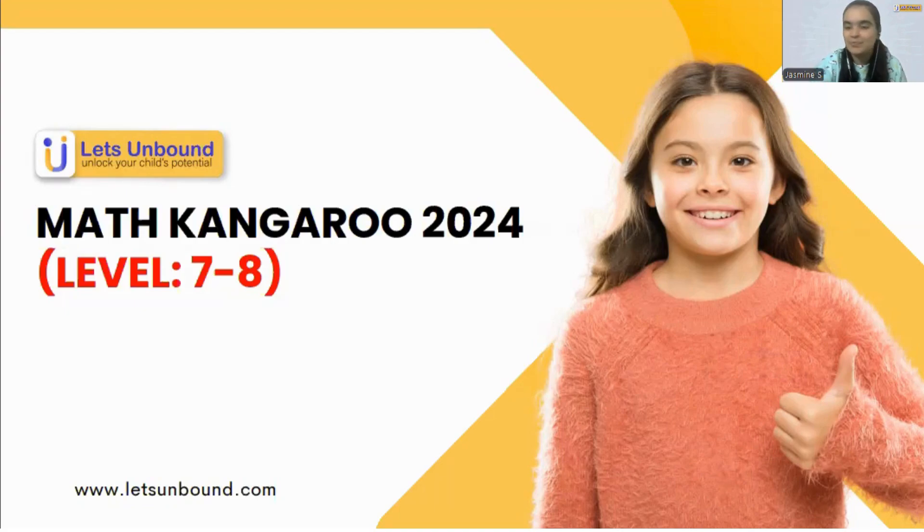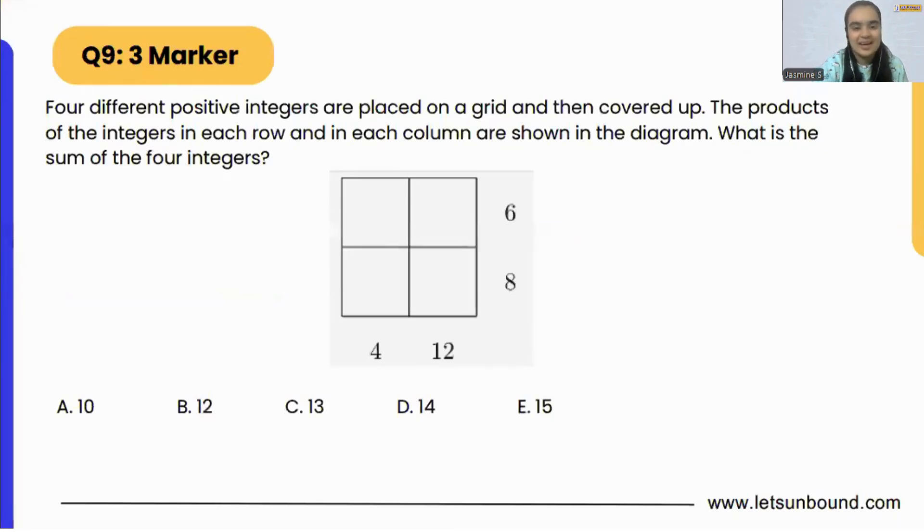More of your doubts in the comment section below. So let's get started with our ninth problem. The question is asking us that four different positive integers are placed on the grid and then covered up. The products of the integers in each row and the column is shown in the diagram.